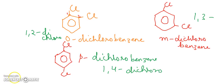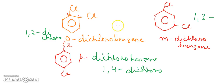Likewise, we name the haloarenes. Today we have learned about the nomenclature of haloarenes in the topic haloalkanes and haloarenes. To learn more chemistry topics, please like, share, and subscribe to the channel Chemistry Class. Thank you.